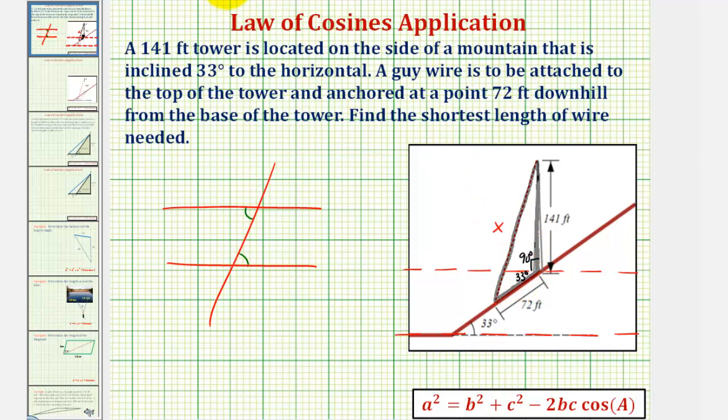So now we know the measure of the obtuse angle in our triangle. So now we can apply the law of cosines to determine the length of the guy wire, or the length of x.